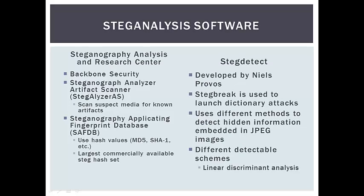The Steganography Analysis and Research Center is focused on steganography research and development. Part of this center is Backbone Security. Their product is called the Steganography Analyzer Artifact Scanner. This software allows the examiner to scan suspect media for known artifacts of steganography applications. It does this by using hash values such as MD5 and SHA-1, stored in its steganography fingerprint database — the largest commercially available steganography hash set. This is similar to how Yahoo and other email services scan attachments for known hash values of child pornography, but instead it scans for steganography hash values.